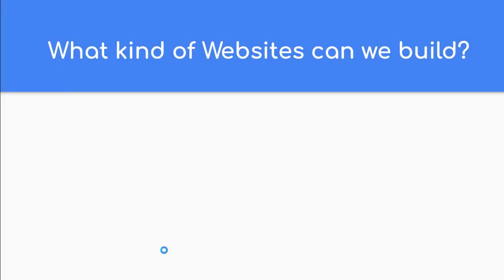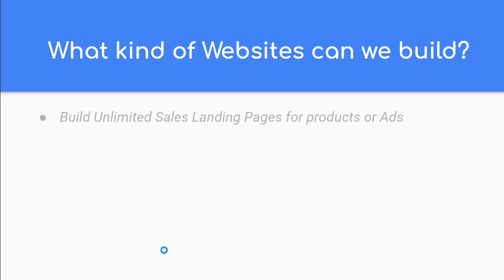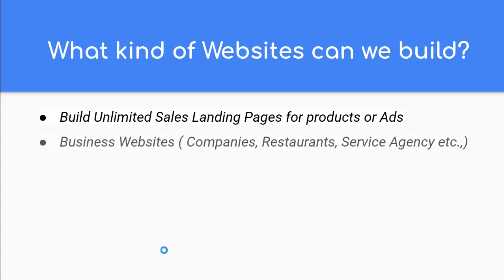What kind of websites can we build? You can create unlimited sales landing pages, any type of opt-in pages for your ads and products — whether you have a product-based or service-based business. You can create landing pages to attach to ads you run on Facebook, LinkedIn, and Instagram.